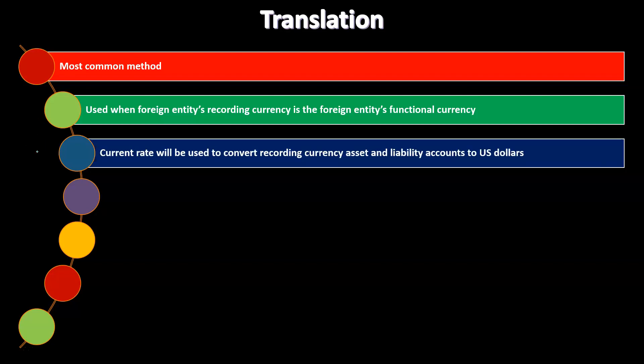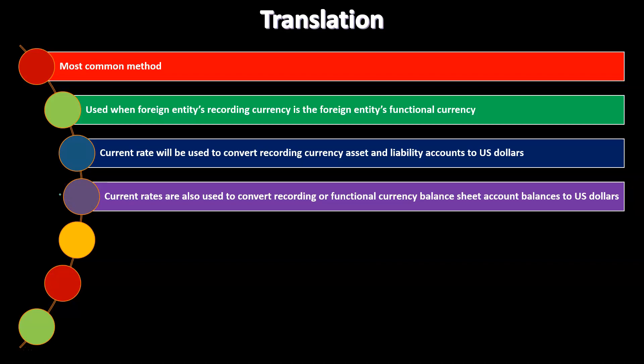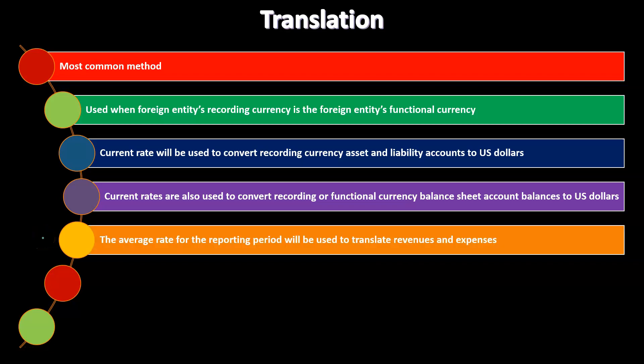When the recording currency equals the functional currency, we translate to the parent company currency — the U.S. dollar. The current rate, meaning the exchange rate as of the balance sheet end date, is used to convert asset and liability accounts to U.S. dollars, which makes sense for balance sheet accounts. Current rates are also used to convert recording and functional currency balance sheet account balances to U.S. dollars.